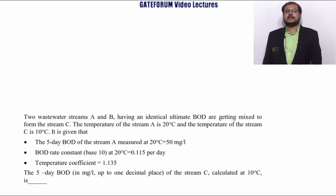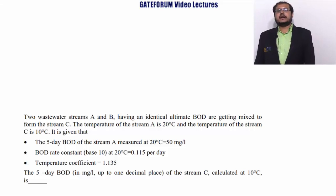Two wastewater streams A and B having identical ultimate BOD are getting mixed to form a stream C. The temperature of stream A is 20°C and the temperature of stream C is 10°C. The 5-day BOD of stream A measured at 20°C is 50 mg/L. Temperature BOD rate constant base 10°C is 0.115 per day. Temperature coefficient is given as 1.135. The 5-day BOD of stream C calculated at 10°C will be...